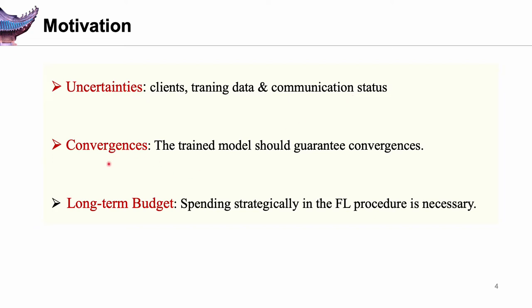Second, model training needs thousands of computational iterations. In each iteration, all clients use their own data to update the local model. The trained model shows a guaranteed convergence, which is the most important aspect of using federated learning. Third, listing the clients would incur considerable costs. Thus, given the long-term budget, spending strategically in the federated learning procedure is necessary since it may significantly affect model convergence.